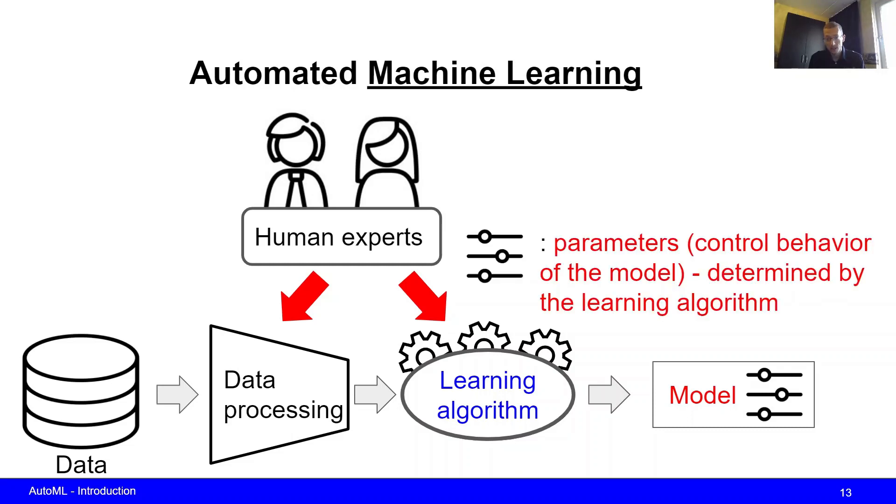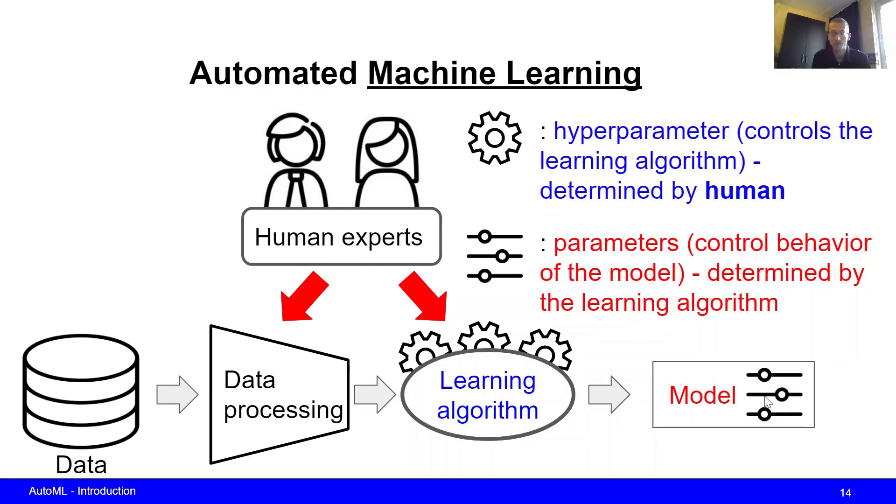Secondly, the model is often associated with parameters denoted by the symbol θ. Parameters control the behavior of the model which is determined by the learning algorithm. The learning algorithm often outputs these parameters and we do not have to think about them ourselves as human experts. That's the reason that there is no arrow from the human experts directly to the model. The learning algorithm also has parameters, but to distinguish these from the model parameters, we call them hyperparameters. Hyperparameters control the learning algorithm and these are often determined by the humans.